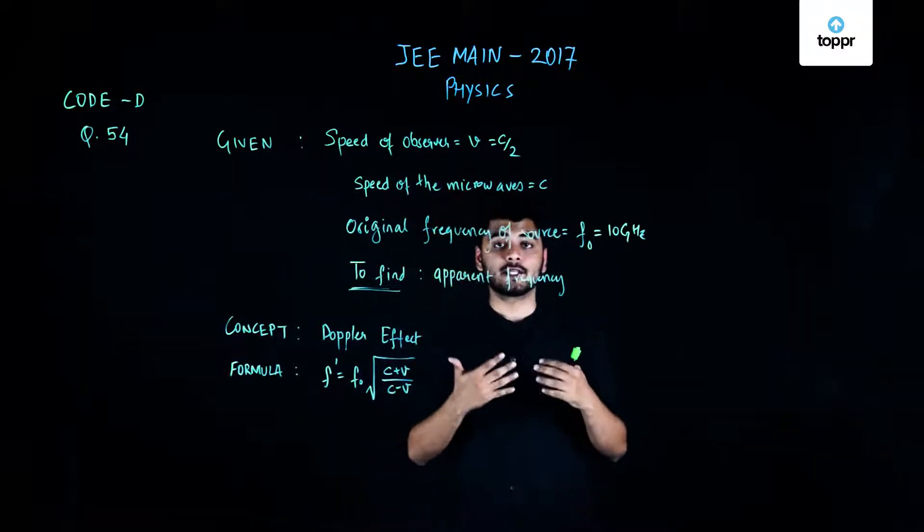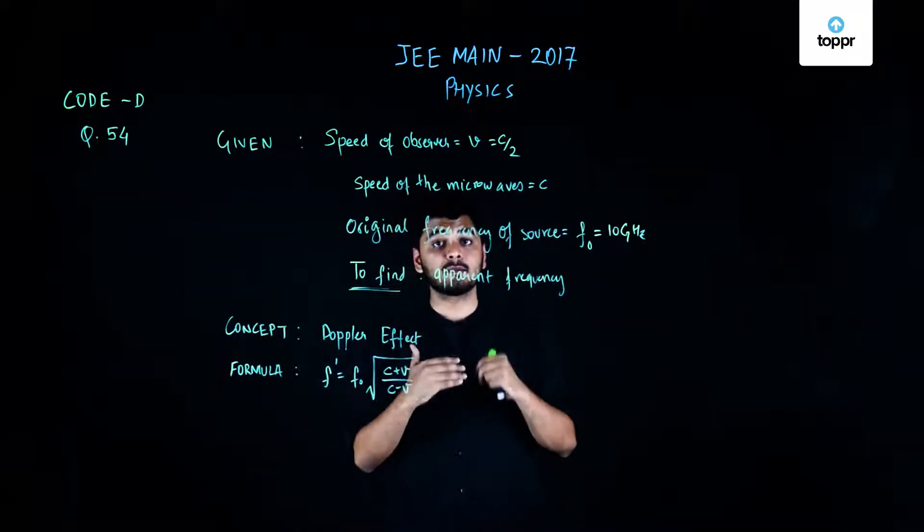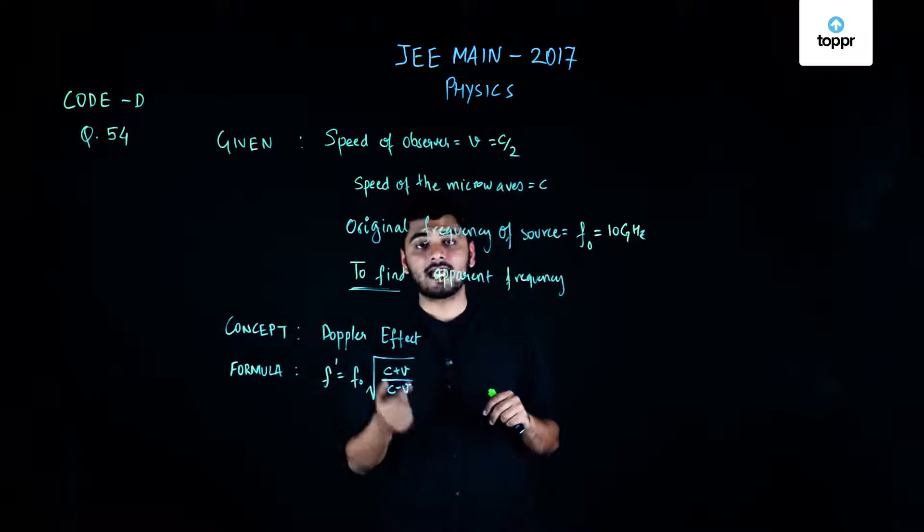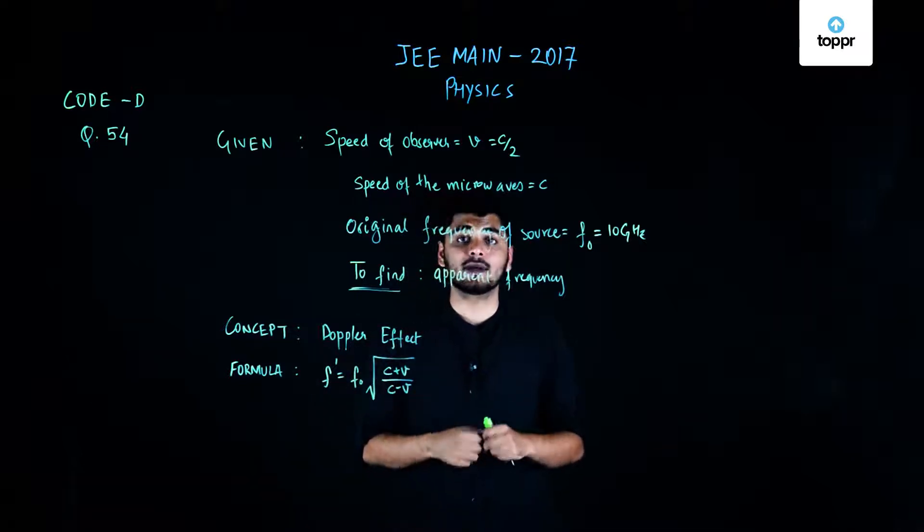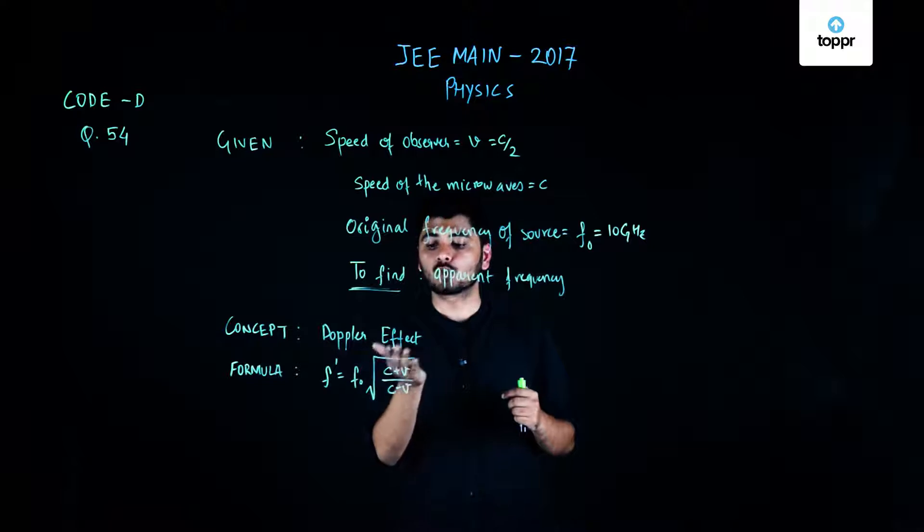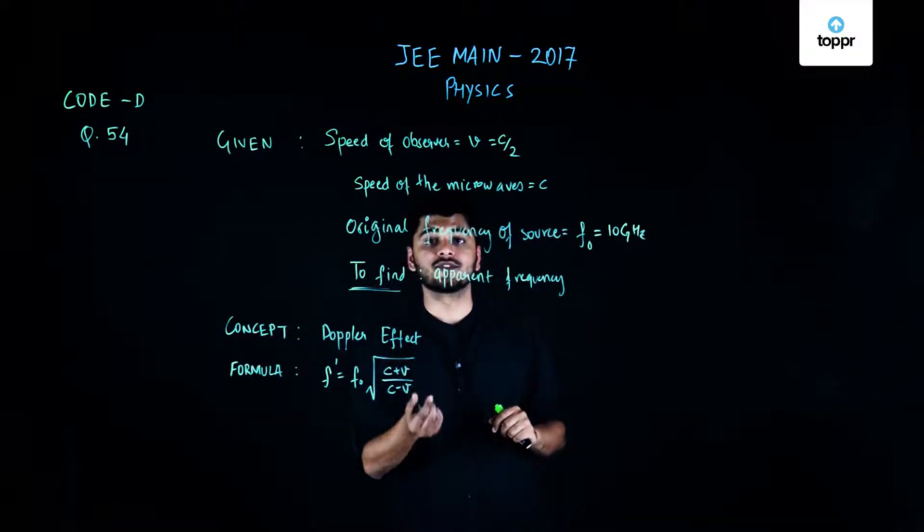The concept we'll be using is the Doppler effect. The formula when the observer is moving is given by F' (the apparent frequency) equals the initial frequency times the square root of (c plus v) divided by (c minus v), where v is the speed of the observer.